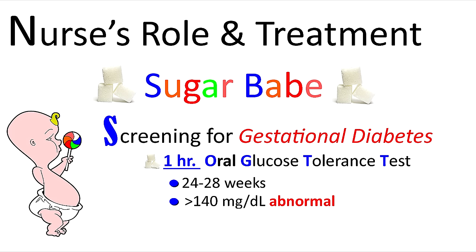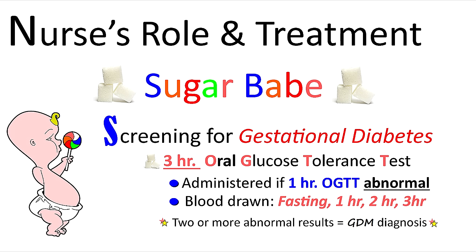If they have an abnormal result, they will have to take the three-hour oral glucose tolerance test on a different day. For this test they will fast beforehand and follow an unrestricted diet with carbs prior. They'll have their blood drawn at several different times — at fasting, then they'll drink about a 100-gram glucose solution, then have blood drawn at one hour, two hours, and three hours. They're looking for two or more abnormal results, and if they have this, they are diagnosed with gestational diabetes.